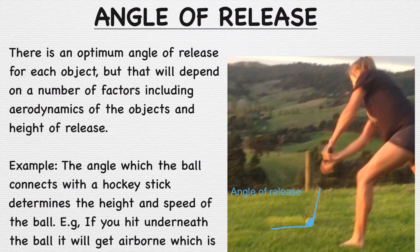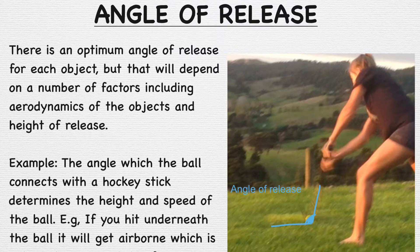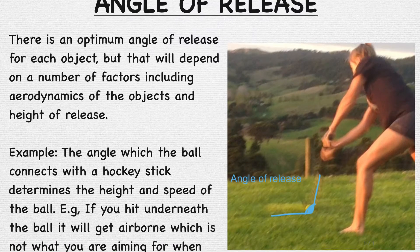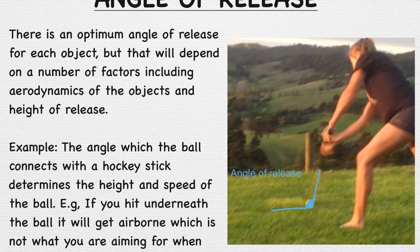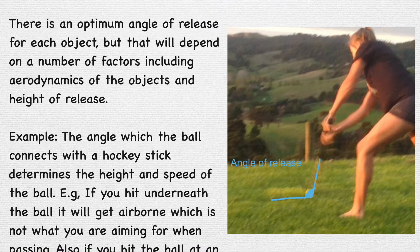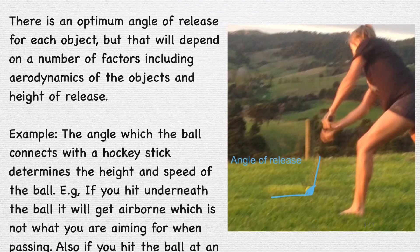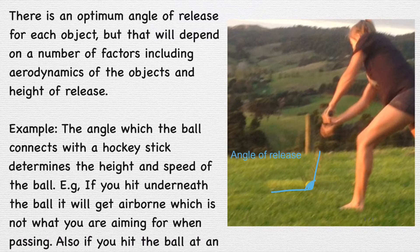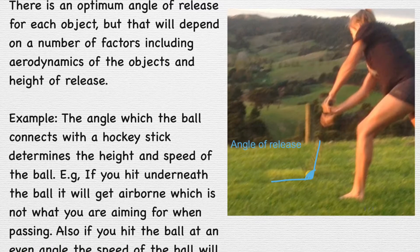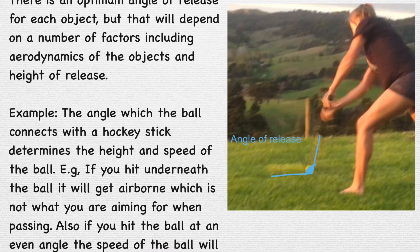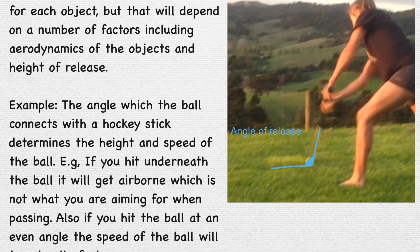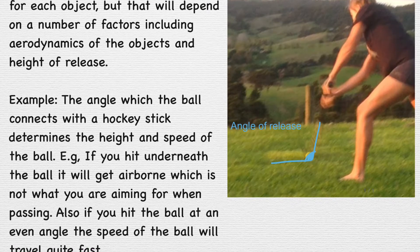And finally, angle of release. There is an optimum angle of release for each object, but that will depend on a number of factors including aerodynamics of the objects and height of release. For example, the angle which the ball connects with a hockey stick determines the height and speed of the ball. If you hit underneath the ball, it will get airborne. If you hit the ball evenly on the stick, the ball will travel quite fast, flat along the turf.